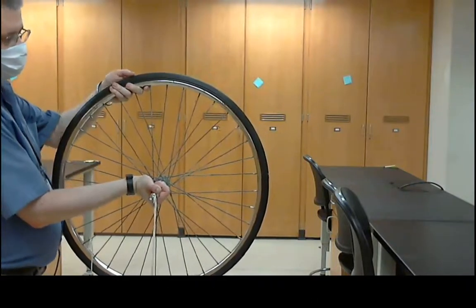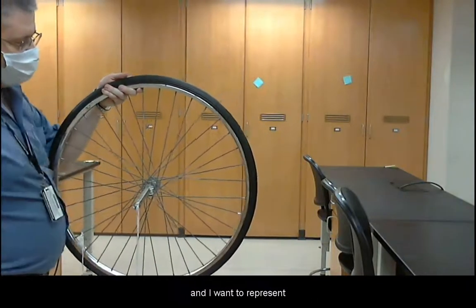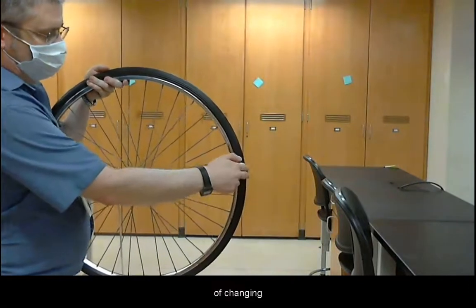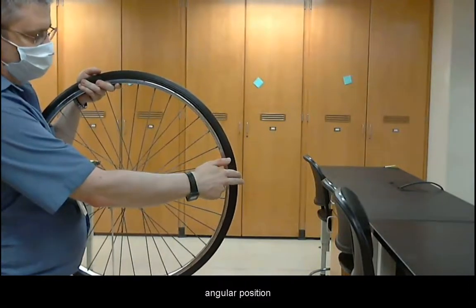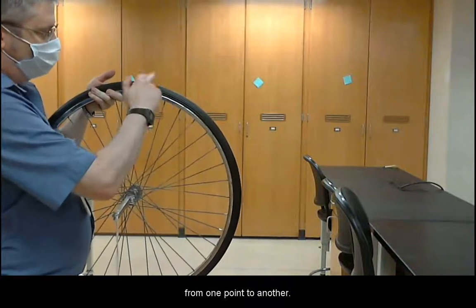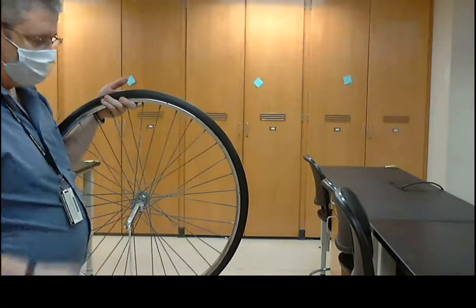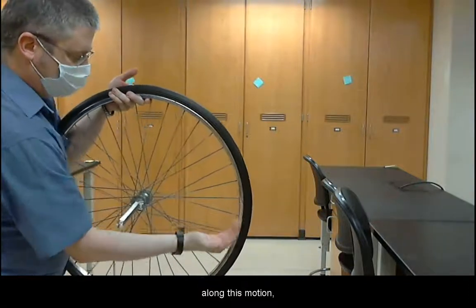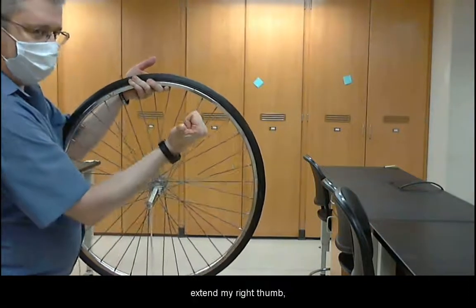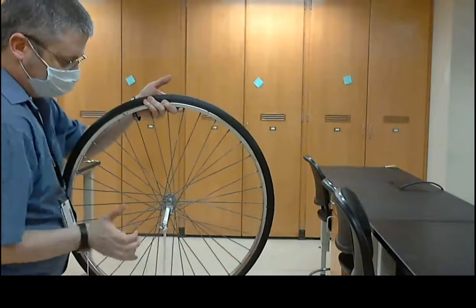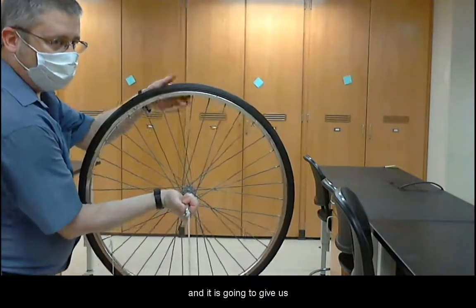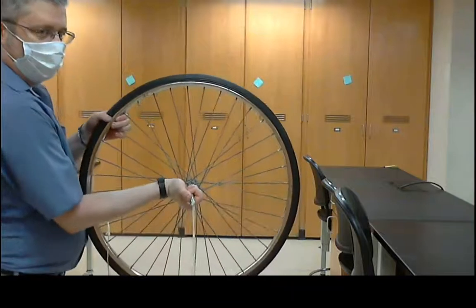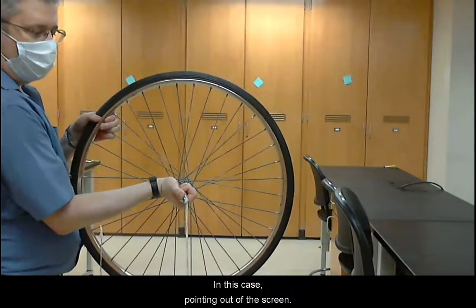Suppose I have this bicycle wheel, and I want to represent a displacement vector of changing angular position from one point to another. I curl my fingers along in this motion, extend my right thumb, and it is going to give us the direction of the vector. In this case, pointing out of the screen.